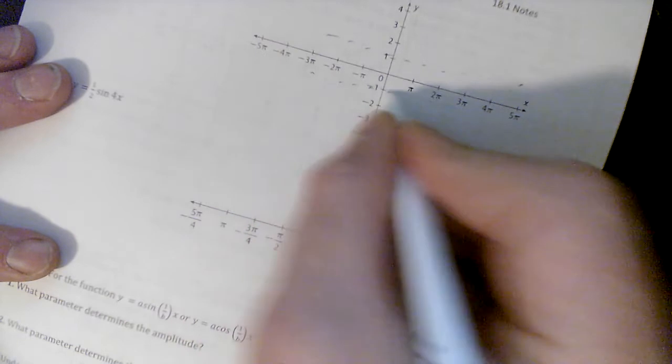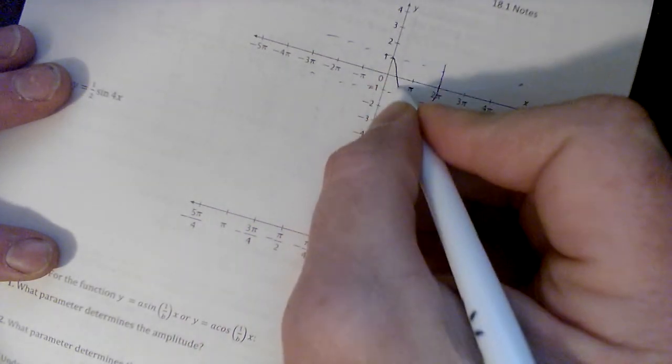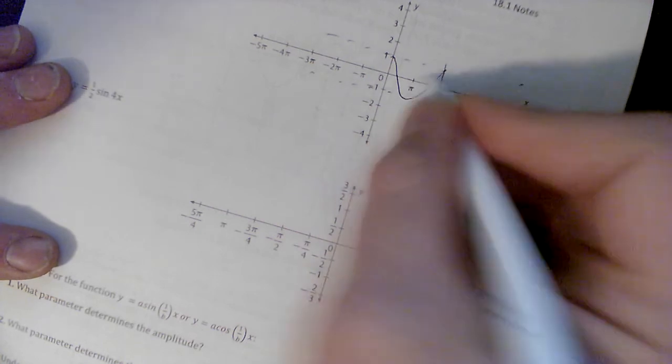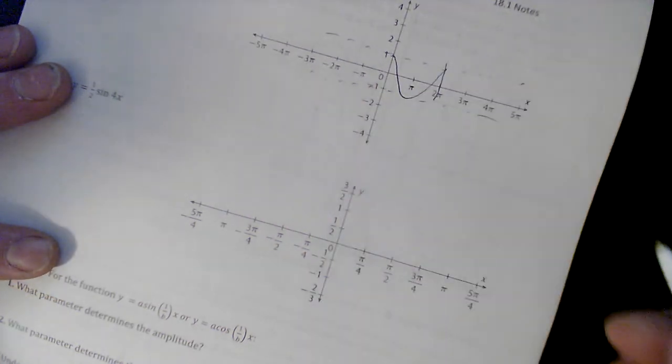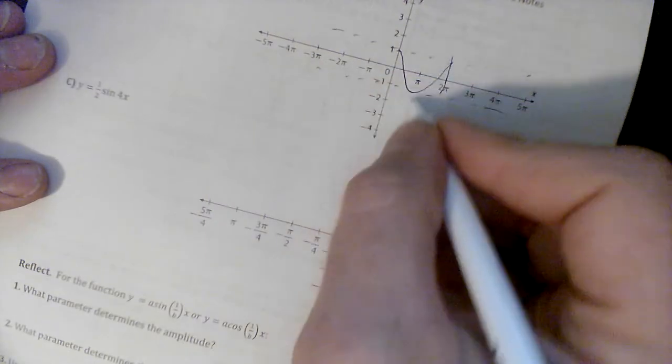Standard cosine graph also maxes out at one, which we're going to change, so I'm going to just draw some dotted lines. It has a period of 2π. Standard cosine graph does this: it starts at the top, goes down. That would be the standard cosine graph that would continue.